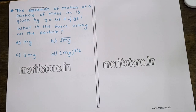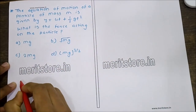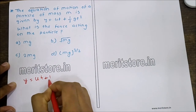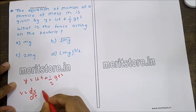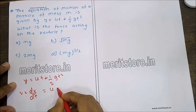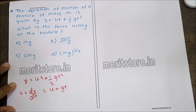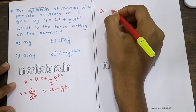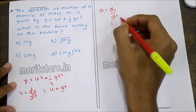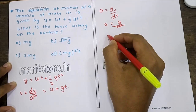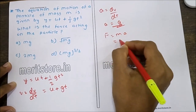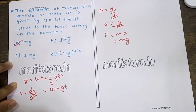The equation of motion of a particle of mass M is given by Y = UT + ½GT². What is the force acting on the particle? Taking the derivative of position gives velocity V = U + GT, and the derivative of velocity gives acceleration = G, which is acceleration due to gravity. Force = mass × acceleration = MG. Hence option A is the correct answer.